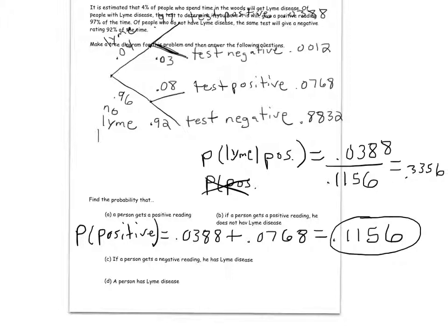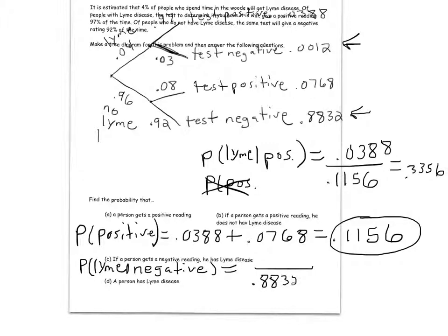Now, given that a person tested negative, what's the probability that they have Lyme disease? If I know they tested negative, I'm only looking at the people that tested negative — that's 0.8832 + 0.0012, which makes up the denominator. The numerator is just the people that have Lyme disease and tested negative: 0.0012. So 0.0012 ÷ (0.8832 + 0.0012) = 0.0014.